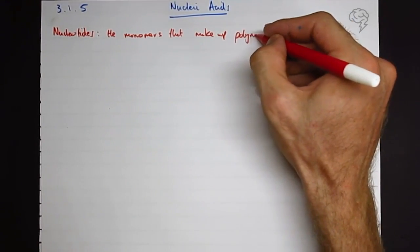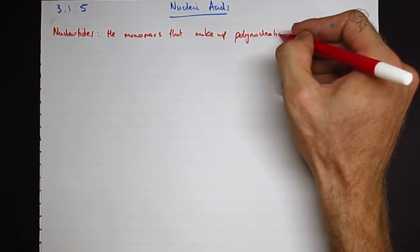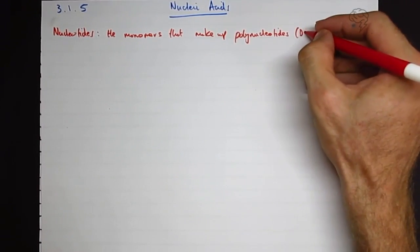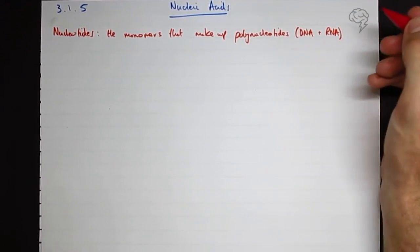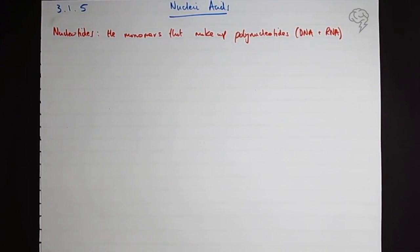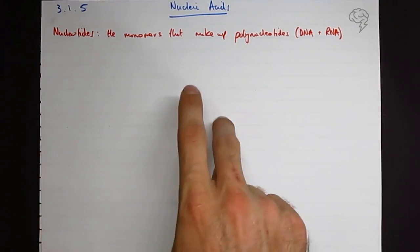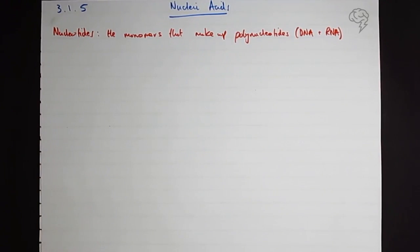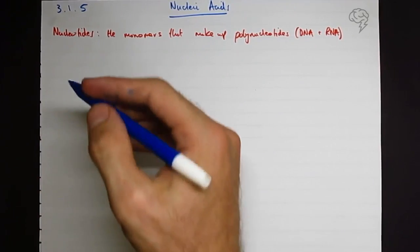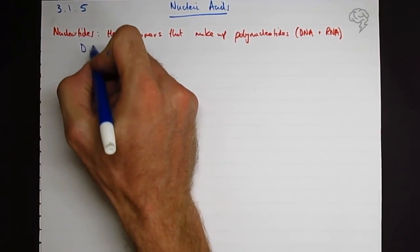Now you might be thinking, what are polynucleotides? Well, they are DNA and RNA, and we're going to look at these in a bit more detail. So again, we're going to have sort of three general columns here.